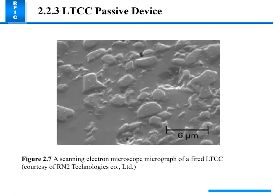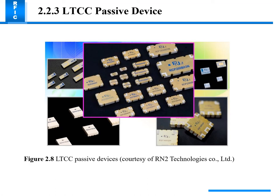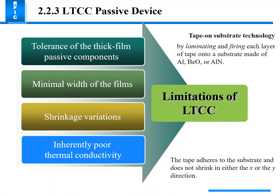This LTCC passive device scanning electrode picture shows the device at 600 micrometers. The limitations of LTCC include tolerance of thick film passive components, minimal width of the film, shrinkage variation, and inherently poor thermal conductivity. This is why LTCC passive devices are not used as extensively in some components.